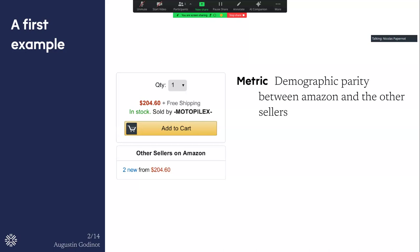So again, I'm the office and I want to audit this system. So what I'm going to do first is define a metric. For example, we could use the demographic parity. So look at the proportion of items that were sold by Amazon versus the proportion of items that were sold by other resellers.